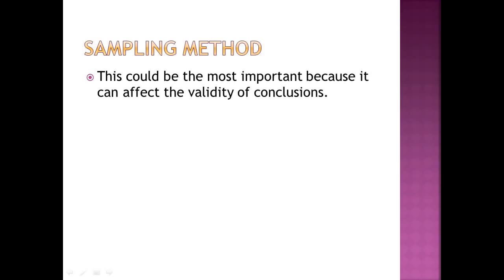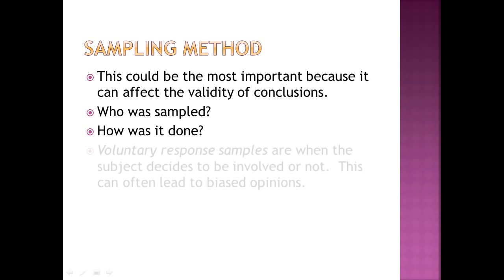The sampling method could quite possibly be the most important of all of them. It can affect your validity of conclusions. If you didn't sample correctly, you could get skewed conclusions, meaning that your result really isn't balanced. Take into account who was sampled and how was it done—was it done ethically, was it not done ethically, was it done quickly or was it not?